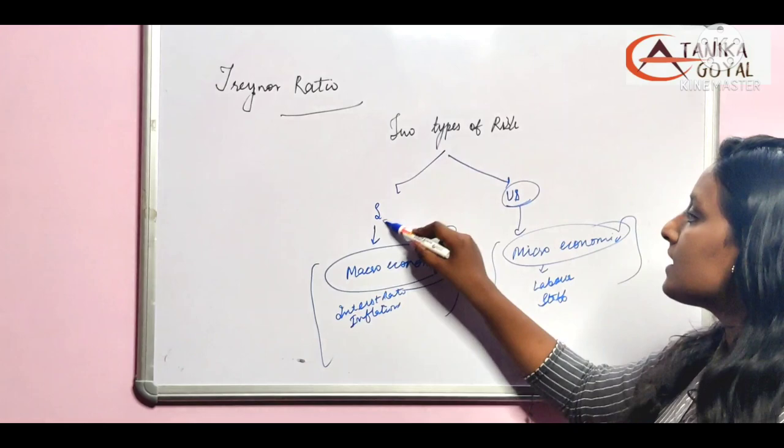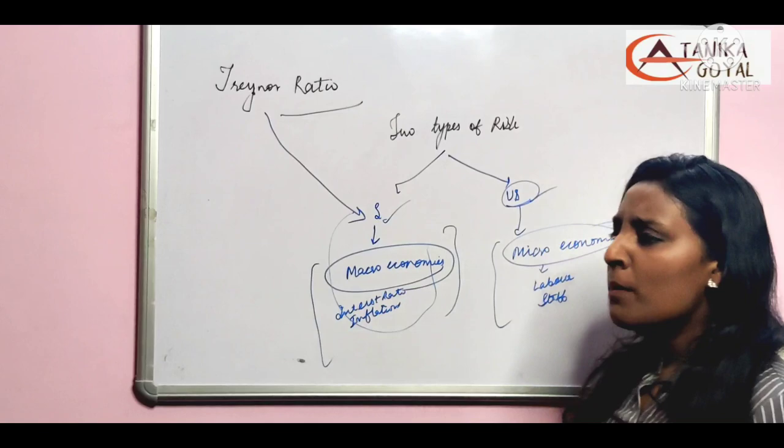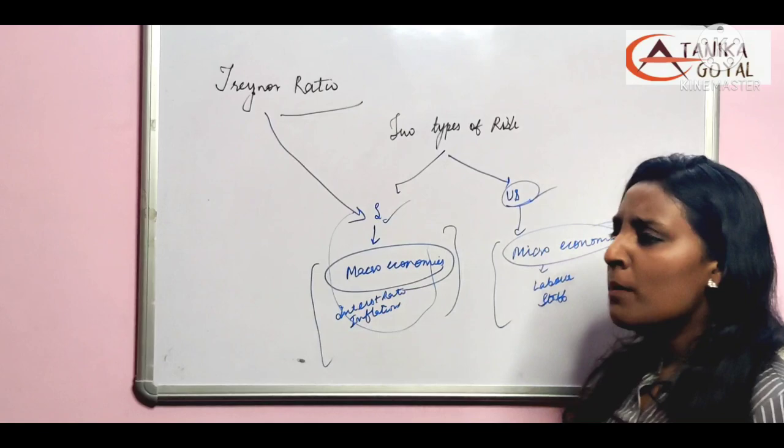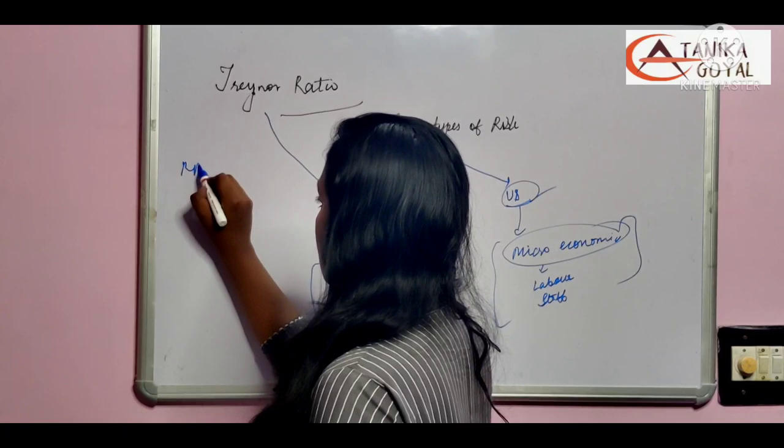What does the Treynor ratio determine? Per unit of reward on the basis of per unit of systematic risk. We call this reward to volatility ratio. The same formula is that Rp minus Rf divided by beta. Beta is the measure of systematic risk.